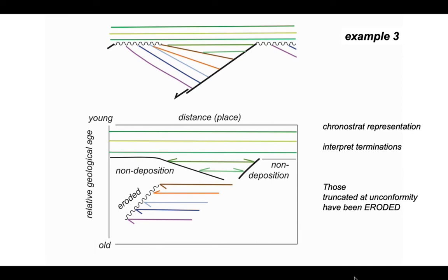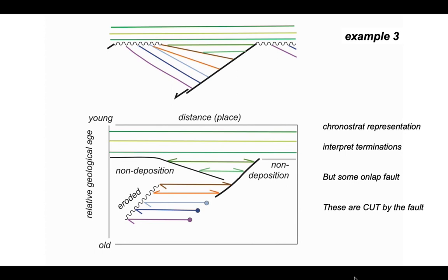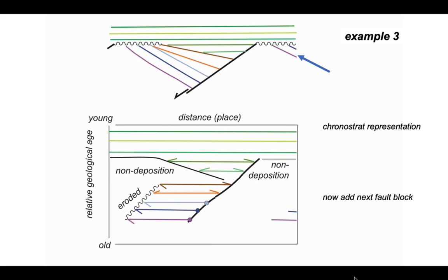Those truncated rocks would have existed further to the left if they hadn't been eroded away. In contrast, the orange horizon never existed to the left because it onlaps the blue horizon. On the right-hand side, the brown and orange horizons onlap the fault plane. The two blue and purple horizons are truncated and offset by the fault plane, shown as small blobs. Moving to the right-hand side of the cross-section, the purple and dark blue horizons in the fault block are truncated by another unconformity, which we add to the chronostrat diagram with upside-down half arrows.